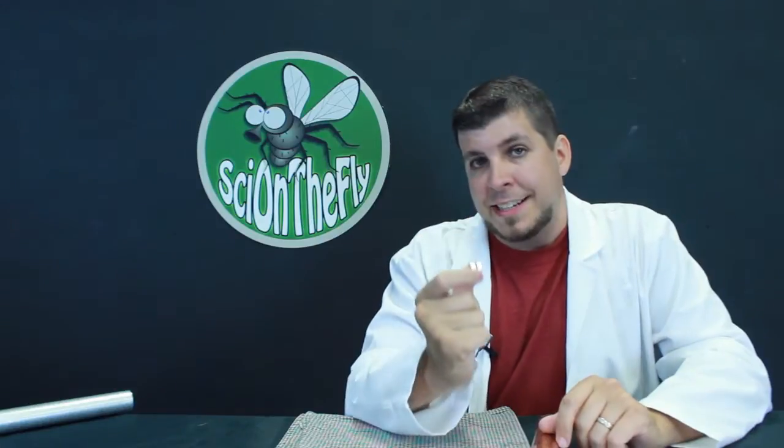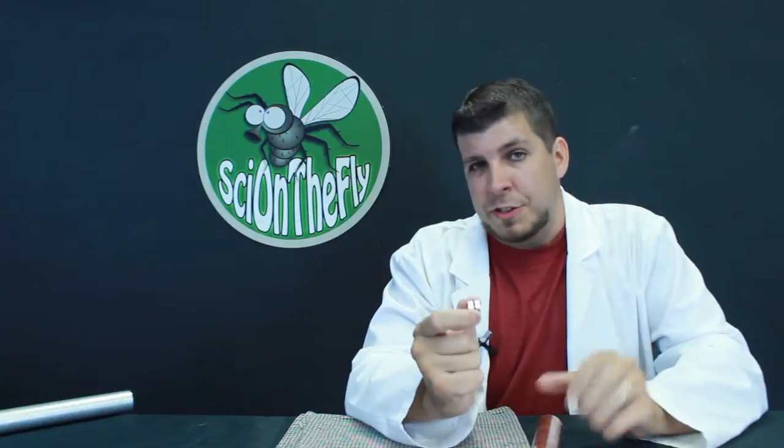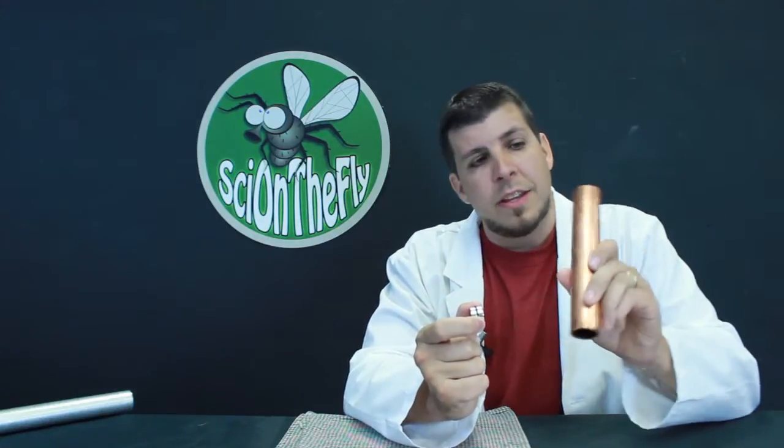Now if I take this same magnet and I drop it through a non-magnetic tube such as this copper pipe, you'll see that it falls much, much slower. Take a look.